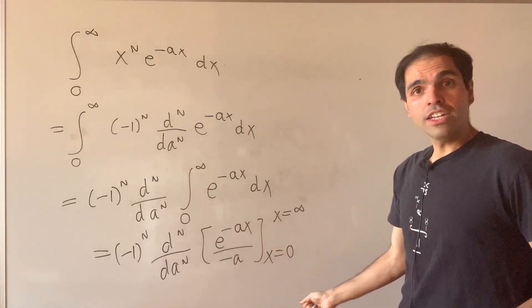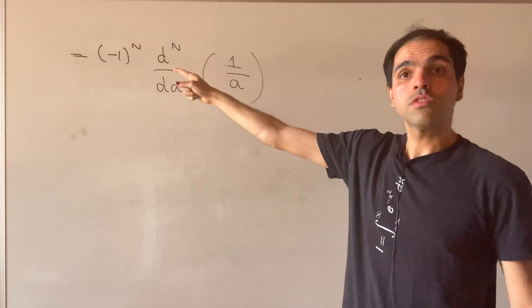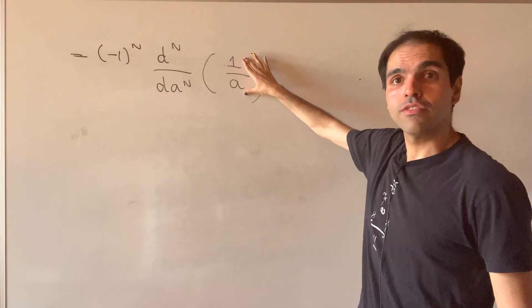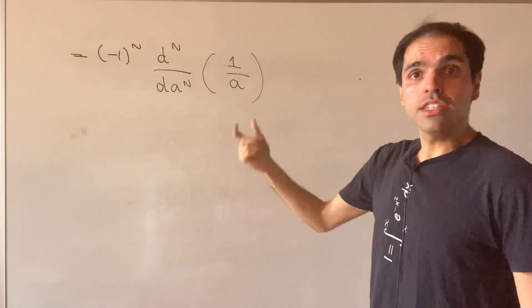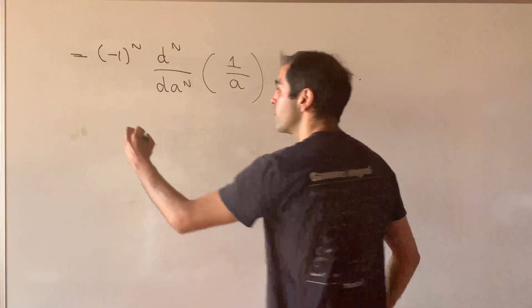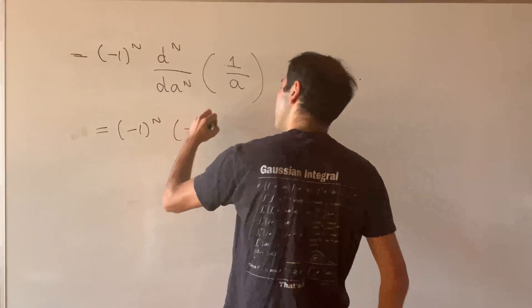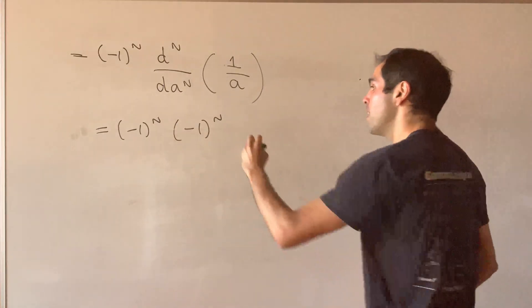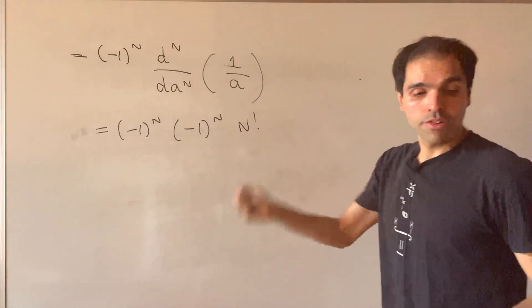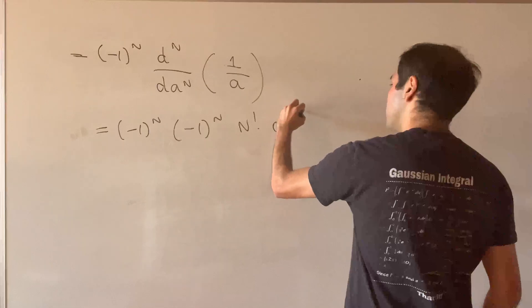So in the end, you just have to differentiate 1 over a n times. In other words, minus 1 to the n times the nth derivative of this. But if you try some examples, you see that the signs will alternate. So in the end we get minus 1 to the n, and then minus 1 to the n because of the alternating signs, times n factorial because of the increasing powers, times a to the minus n plus 1.